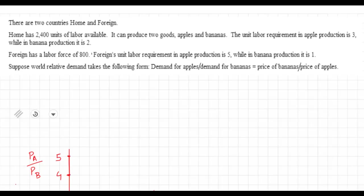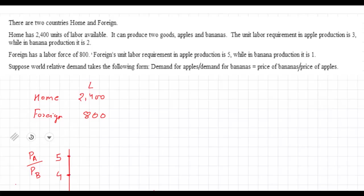We have been given information about two countries, the home country and the foreign country. I'm going to put this down in a table format. The home country has 2,400 units of labor and the foreign country has 800 units of labor. The unit labor requirement for apples (ALA) in the home country is 3 and for banana production (ALB) is 2. For the foreign country, it's 5 and 1.